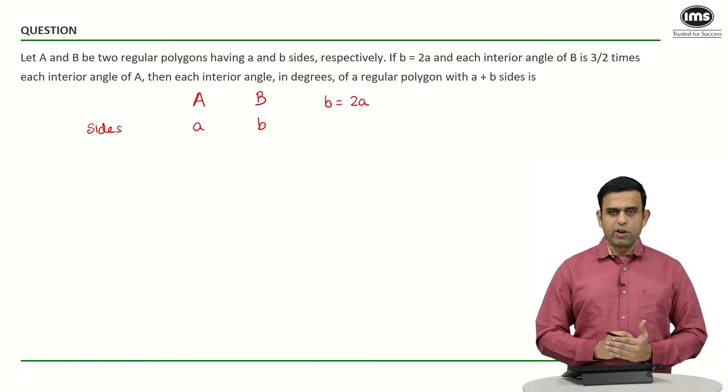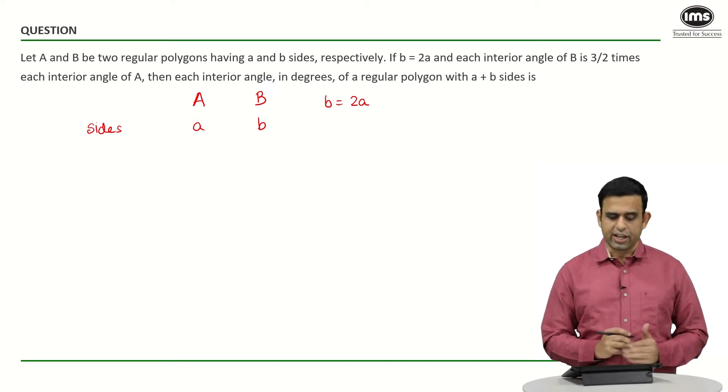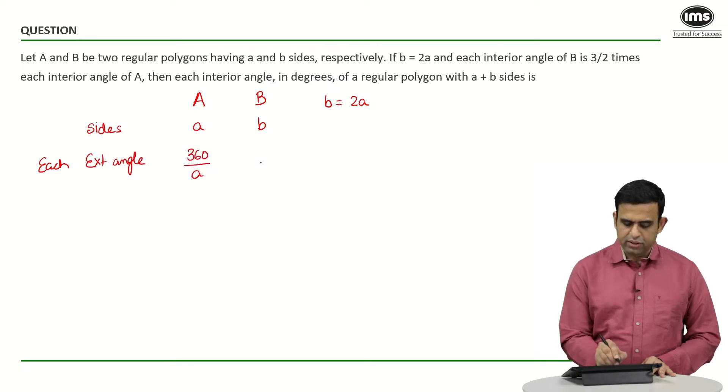Now if the figures are regular polygons, can I find out the exterior angle? Each exterior angle will be equal to 360 divided by a for one polygon, and 360 divided by small b for the other.